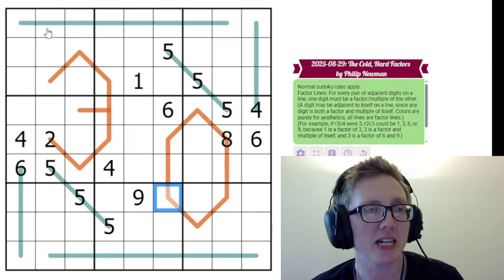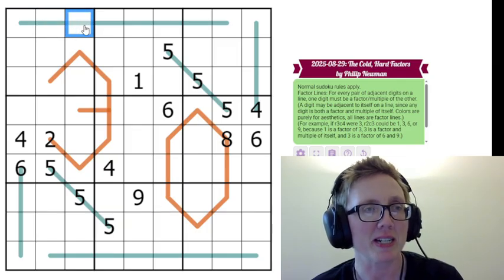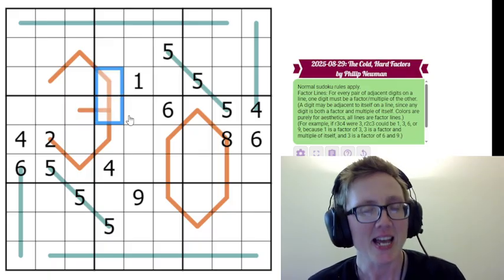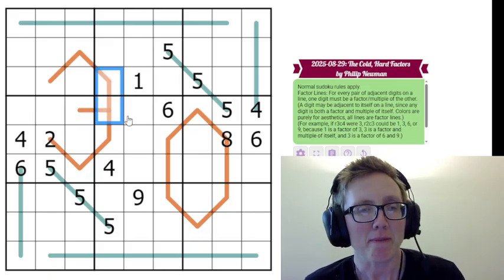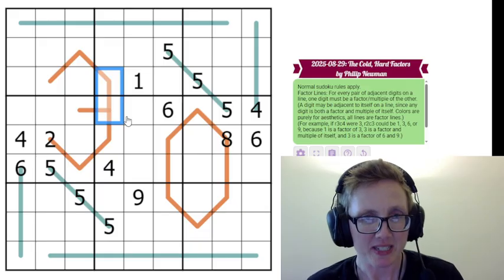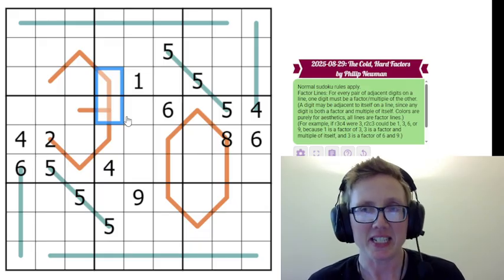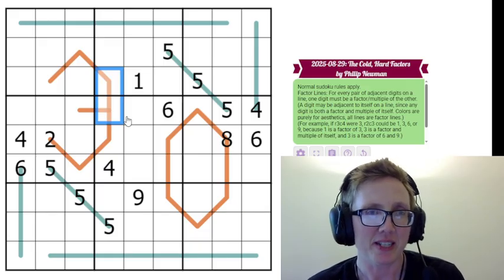A factor line is a line where two digits that are directly joined to each other by the line, so like these two digits, or these two digits, or these two digits, one of them has to be a factor of the other, which means that one of them divides evenly into the other, one is a multiple of the other, and so on.